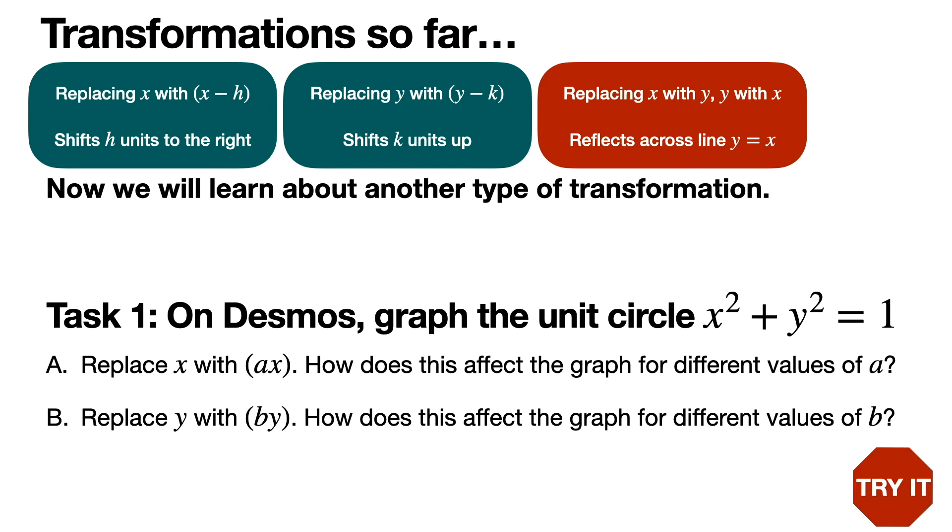Here's our first task. On Desmos, graph the unit circle x² + y² = 1 and replace x with ax and let a be a slider. How does this affect the graph for different values of a? Similarly, replace y with by. How does that affect the graph? Try it out.